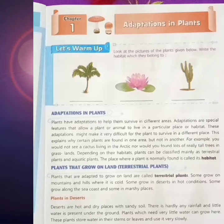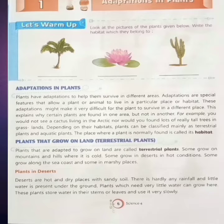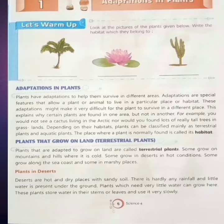These adaptations might make it very difficult for the plant to survive in a different place. इससे पौदों को अन्य अस्थान पर जीवित रहना कठिन हो सकता है. This explains why certain plants are found in one area but not in another. ये बताते हैं कि कुछ पौदे एक छेतर में पाये जाते हैं लेकिन दूसरे में नहीं. For example, you would not see a cactus living in the arctic, nor would you find lots of really tall trees in grassland. उधारण के लिए आपको arctic में cactus नहीं दिखाए देंगे और नहीं आपको घास के छेत्रों में बहुत उचे पेड मिलेंगे.